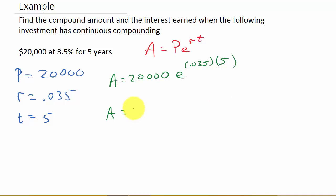And so, that gives us $23,824.92. Round it to two decimal places. And so, that's the compound amount.